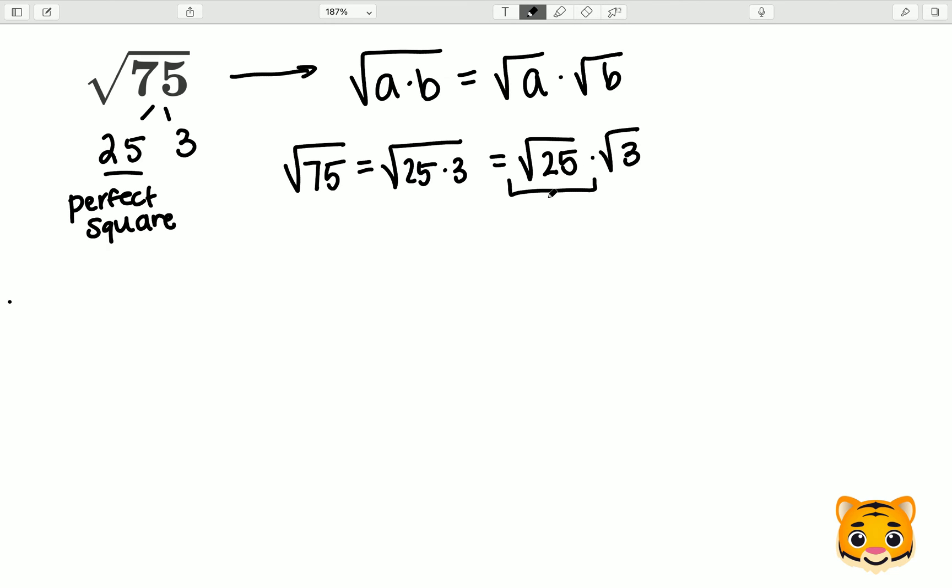The square root of 25 is 5 as 5 squared gives us 25. So now we can say that the square root of 75 equals 5 times the square root of 3. This gives us a simplified version of the square root of 75.